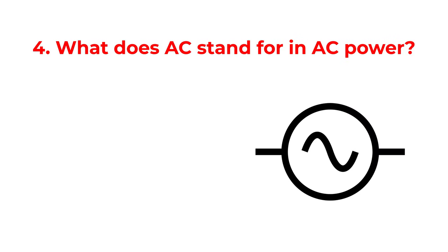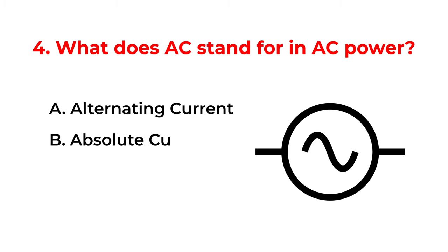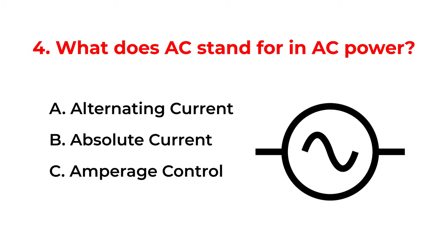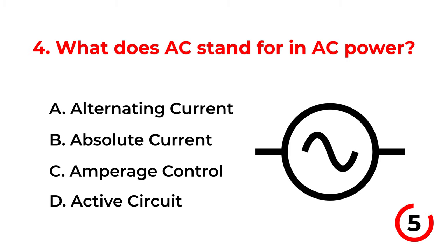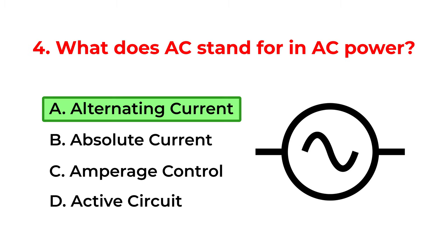What does AC stand for in AC power? A. Alternating current. B. Absolute current. C. Amperage control. D. Active circuit. The correct answer is option A: Alternating current.